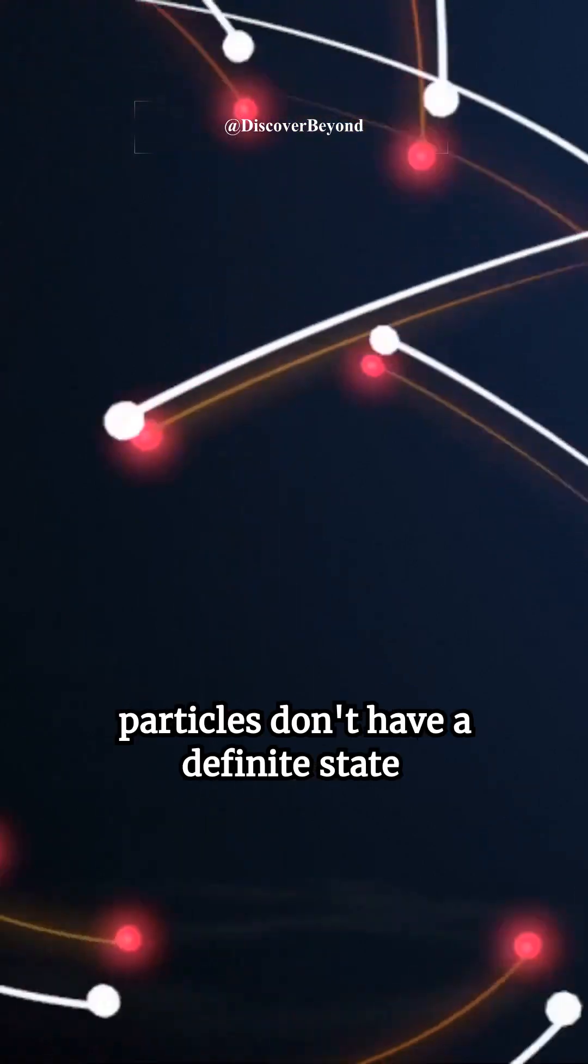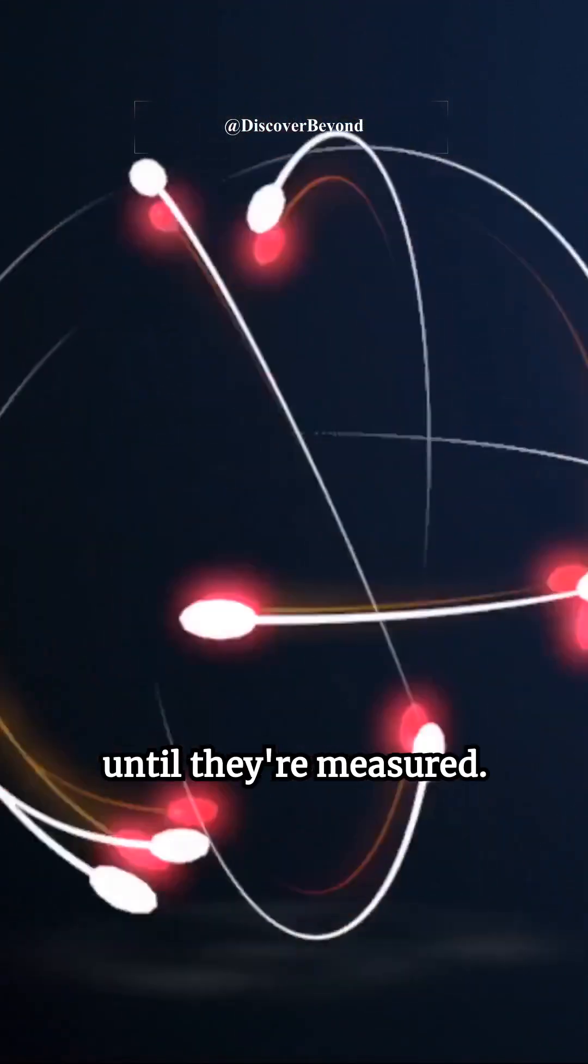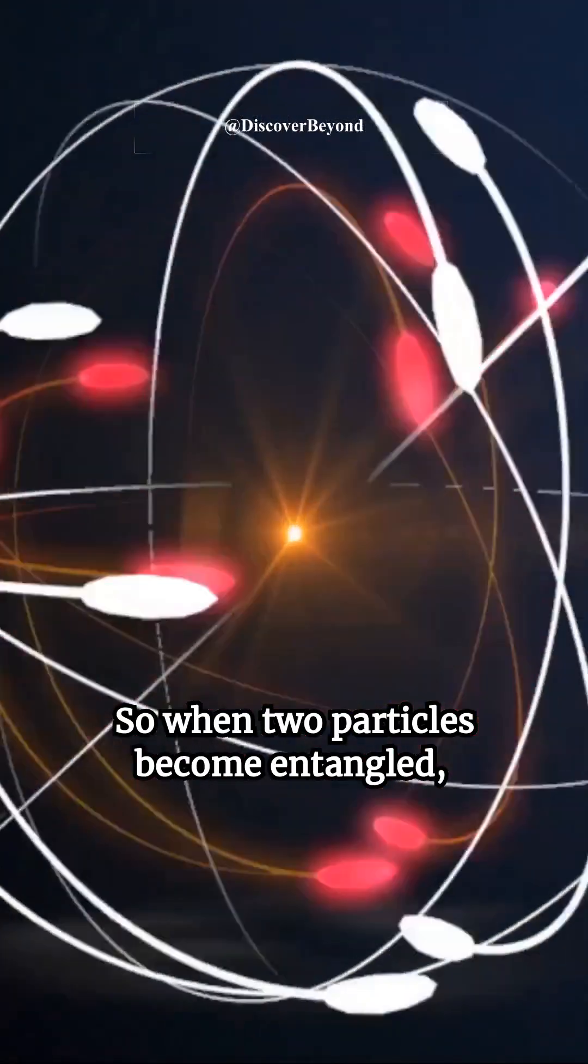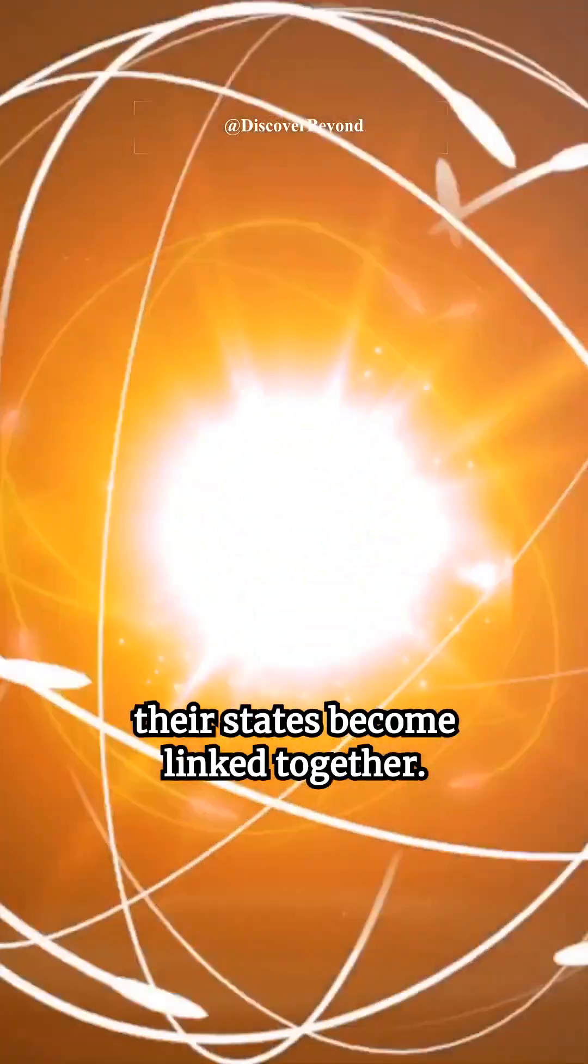According to quantum mechanics, particles don't have a definite state until they're measured. So, when two particles become entangled, their states become linked together.